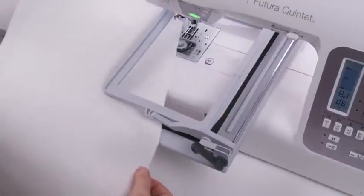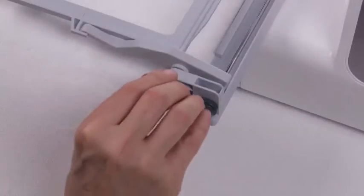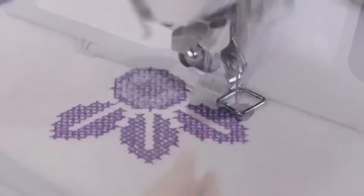Place the fabric into the endless hoop. Line up the fabric with the guide along the side of the hoop. Set the clamp in place, then start embroidering.